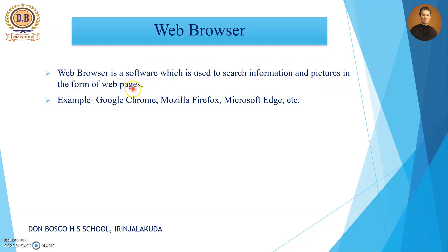We get information and pictures in the form of pages, and those pages are known as web pages. Examples of web browsers are Google Chrome, Mozilla Firefox, and Microsoft Edge.